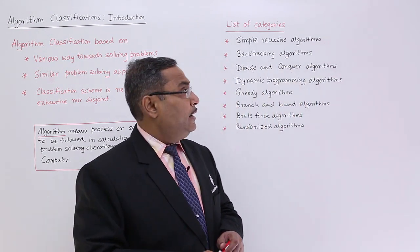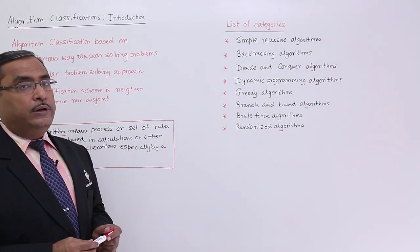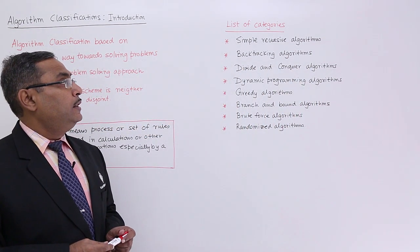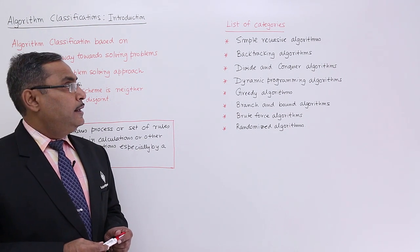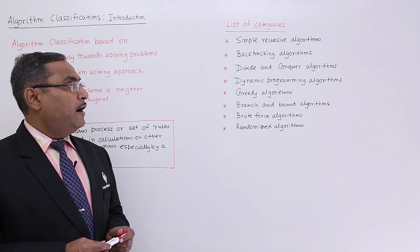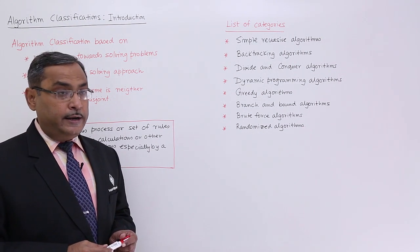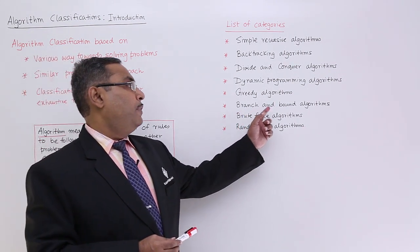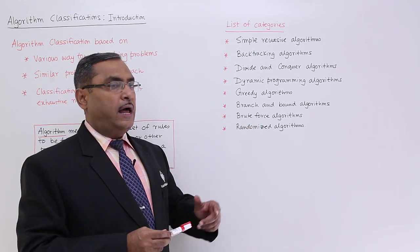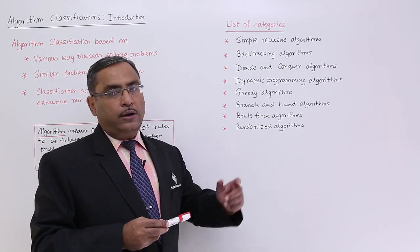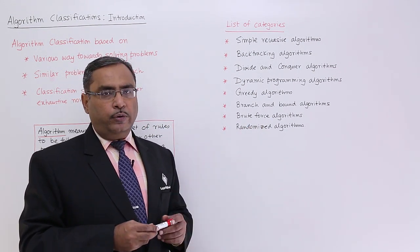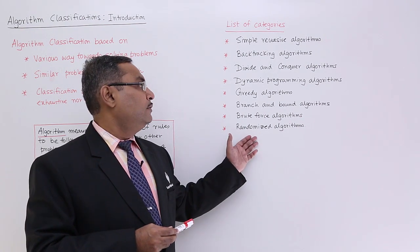Here the list of categories we have listed: simple recursive algorithms, backtracking algorithms, divide and conquer algorithms, dynamic programming algorithms, greedy algorithms, branch and bound algorithms, brute force algorithms, and randomized algorithms. These are the main eight categories we can formulate here.